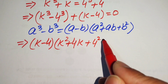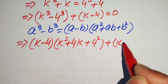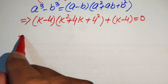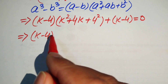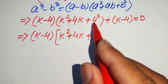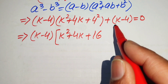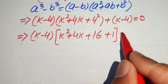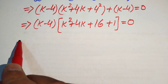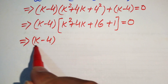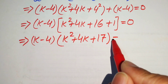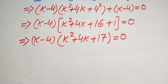We notice that (k minus 4) is a common factor. Factoring it out gives (k minus 4)(k squared plus 4k plus 16 + 1) equals 0. Combining like terms, this simplifies to (k minus 4)(k squared plus 4k plus 17) equals 0.